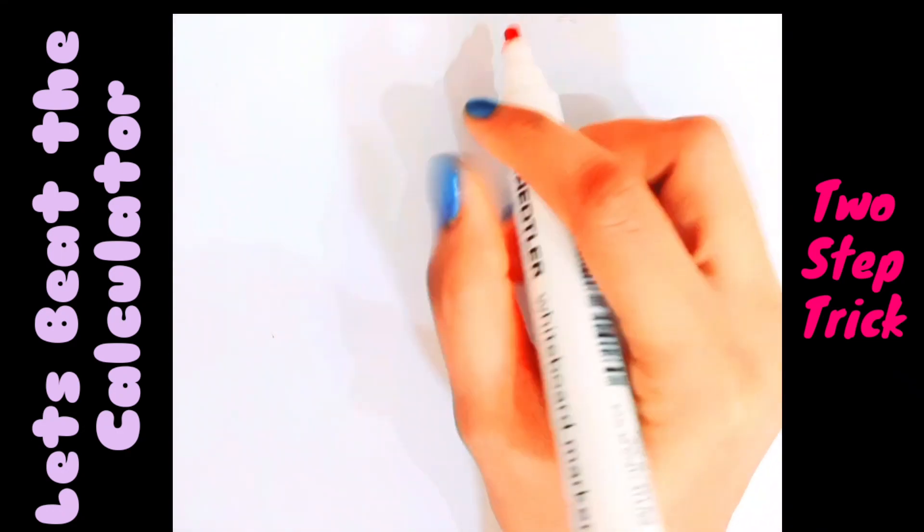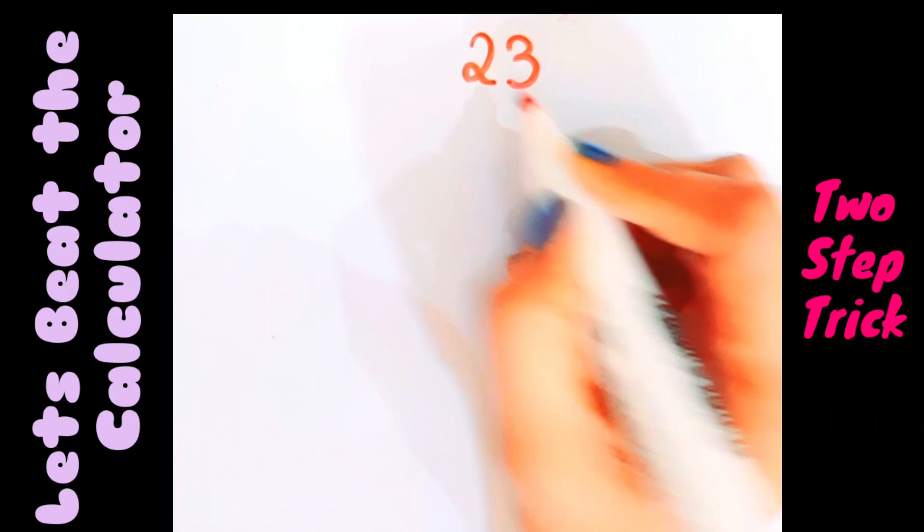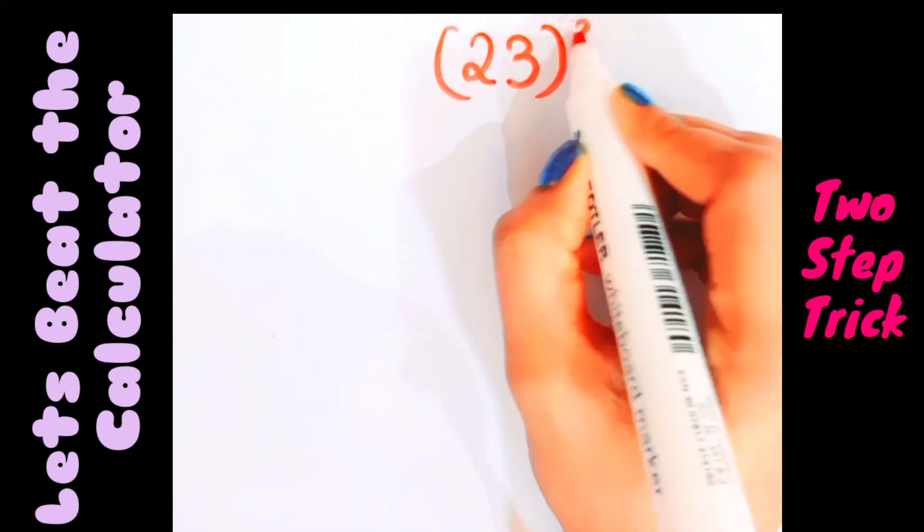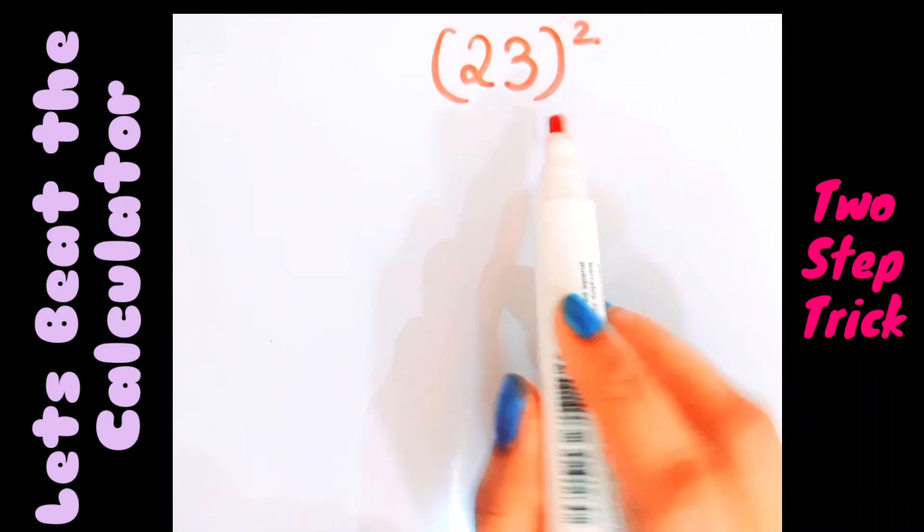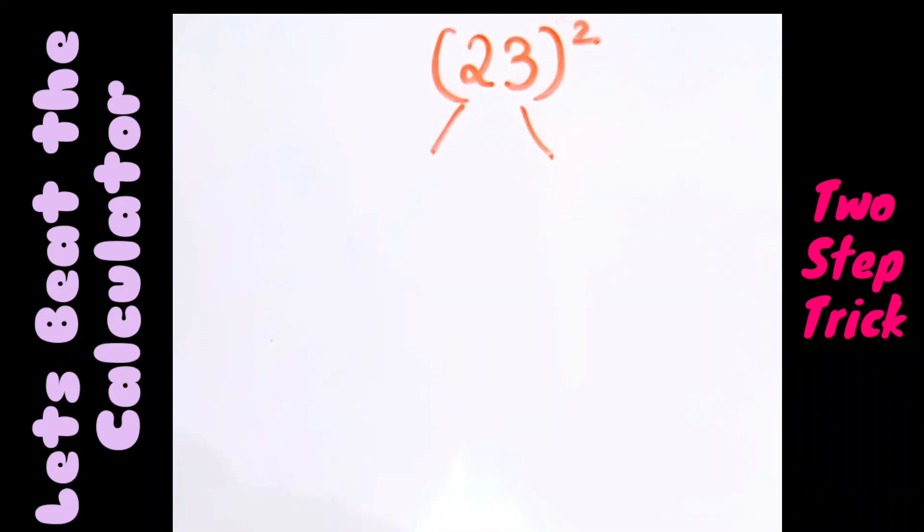If the first question is 23 and I need to find the square of 23, what we have to do is take the square of each number individually.